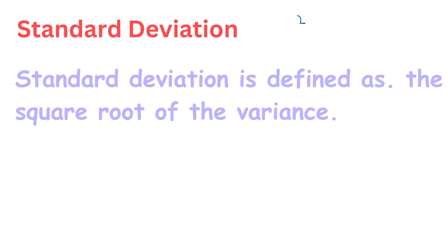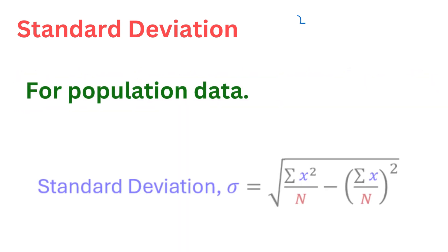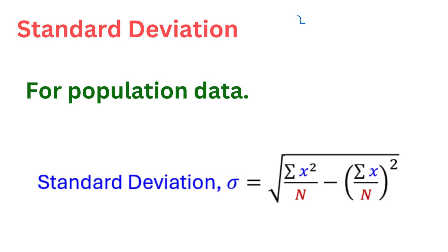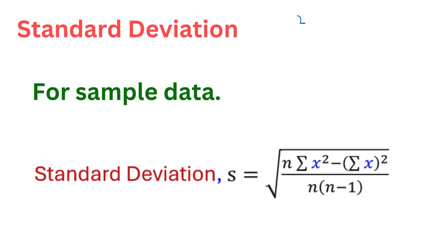Standard deviation is defined as the square root of the variance. For population data, the standard deviation can be found by using the formula shown. For sample data, the standard deviation can be found by using the corresponding formula.